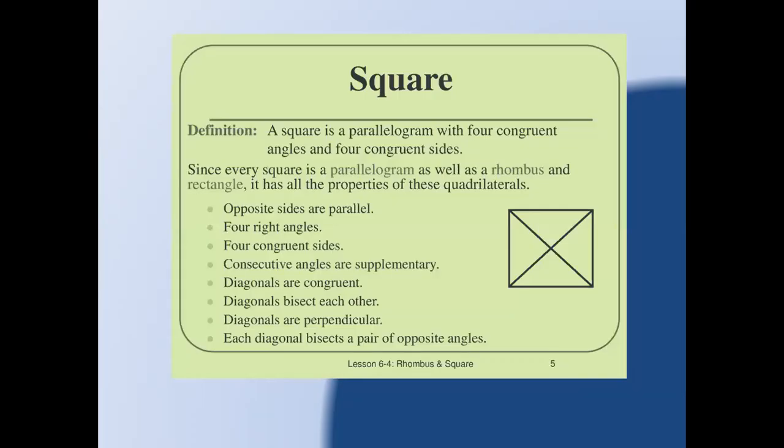Now comes the square. A square is a parallelogram with four congruent angles and four congruent sides. Since every square is a parallelogram as well as a rhombus and rectangle, it has all the properties of these figures. First, opposite sides are parallel. It has four right angles and four congruent sides, meaning all sides are equal. Consecutive angles are supplementary, meaning their sum equals 180 degrees.